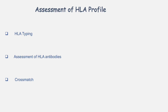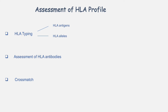Now we will discuss different techniques used in assessment of HLA profile of a person for organ transplant. There are different aspects of assessment of HLA profile. One aspect is HLA typing, in which we identify which HLA antigens or HLA molecules a person has. If we perform analysis at the DNA level, we can identify which HLA alleles a person has.